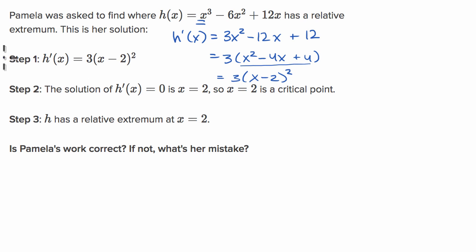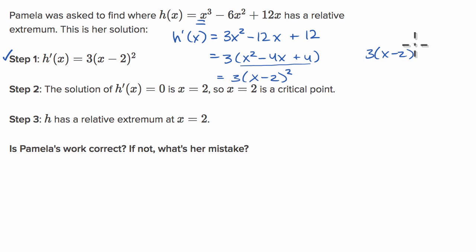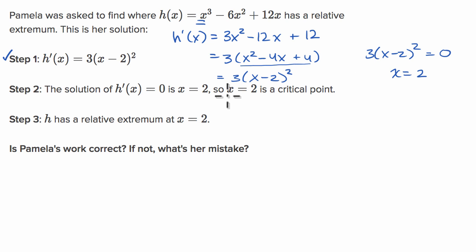So her step one looks right on target. Step two: the solution of h prime of x equals zero is x equals two. That works out — if you set three times x minus two squared equal to zero, this is true when x equals two. And any point where your first derivative is equal to zero, or it's undefined, is indeed a critical point. So this step looks good so far.